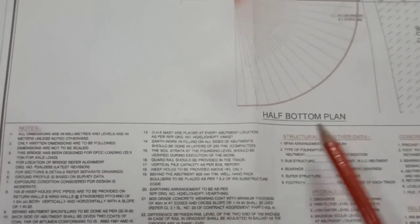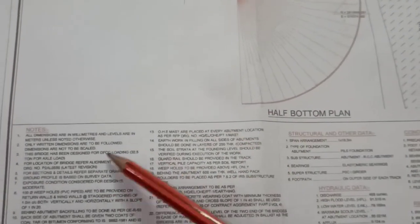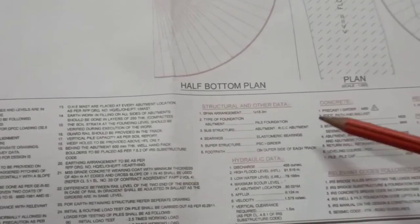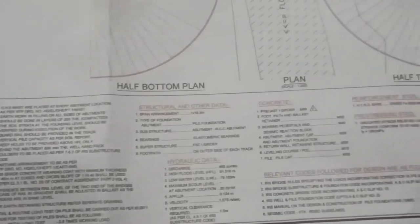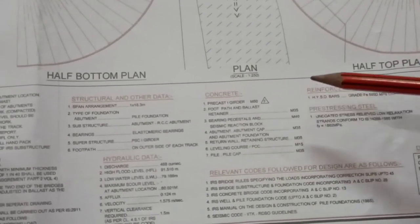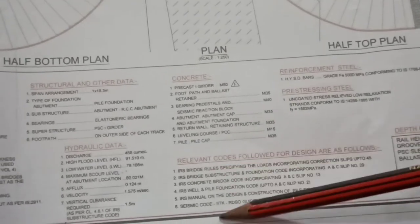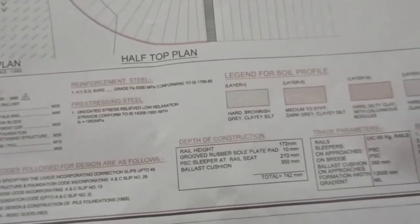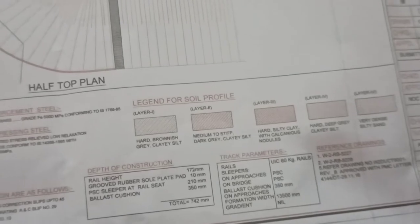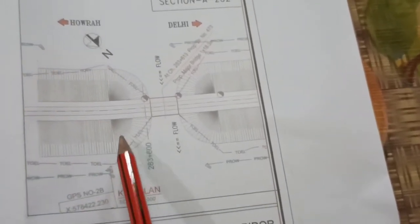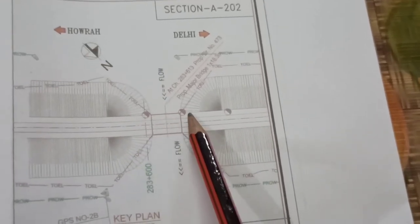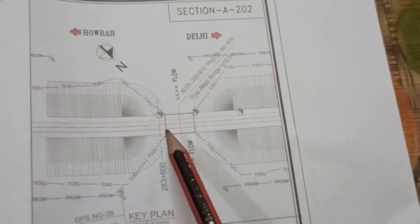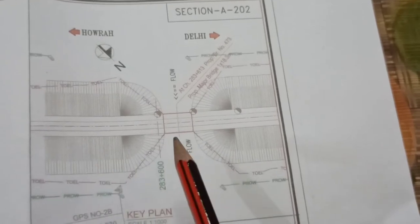We also have some notes in the major bridge drawing, showing all the details of this structure. Some structural notes and hydraulic data are given at the bottom. Details of concrete and steel, and the codes followed for designing this bridge are also mentioned here. Since these are pile foundations, the pile capacities are also mentioned. At the top we have a key plan showing the position of our bridge. Coordinates are also given so that people can mark the location at site with the help of a total station.